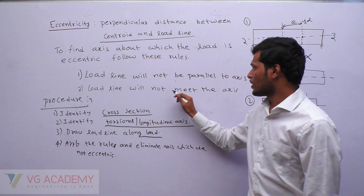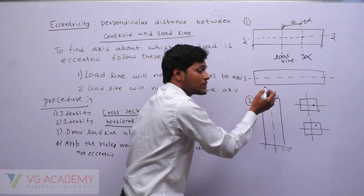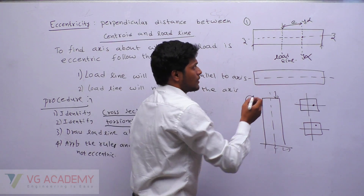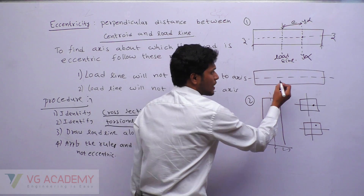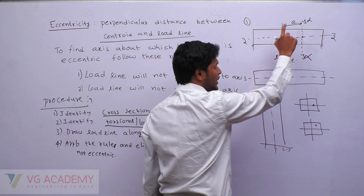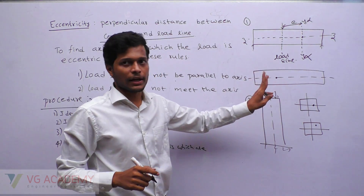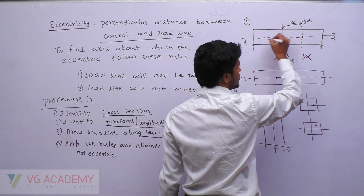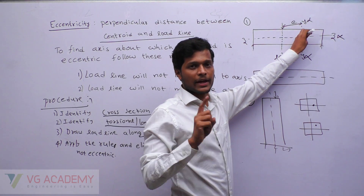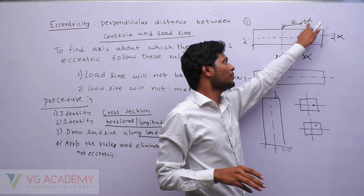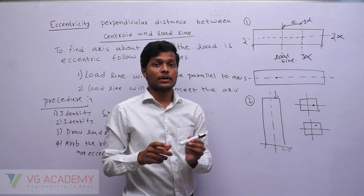Second rule: the load line will not meet the eccentric axis. Here it looks like the load line is meeting the Z axis, but you have to see the top view also to confirm whether it is meeting or not. This is only the front view. Suppose if the load is positioned such that it meets the axis, you can eliminate Z axis. At every centroid you have three axes — XX, YY, ZZ. I have eliminated Y and Z, so the answer is the X axis.